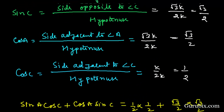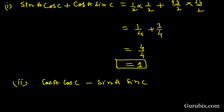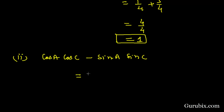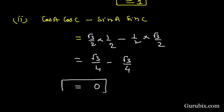Now we shall solve part 2: cos A cos C minus sin A sin C. This is clearly square root of 3 over 2 times 1 over 2, minus 1 over 2 times square root of 3 over 2. So this equals square root of 3 over 4 minus square root of 3 over 4, which equals 0. This is the solution of the second part, and thus the solution of the whole question. Thank you.